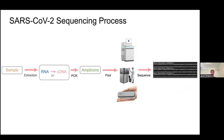Here's a high-level diagram of the sequencing process. We start from a nasal swab sample, perform RNA extraction, then reverse transcription to convert RNA to cDNA. We amplify using two pools of PCR primers to get 400 bp amplicons, pool the two amplicon pools together, ligate barcodes for multiplexed sequencing, put it onto our sequencer — either Illumina or MinION — and get sequencing reads out. The output is a FASTQ file, a standard way of representing sequencing data.